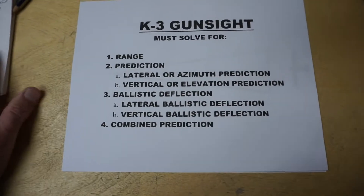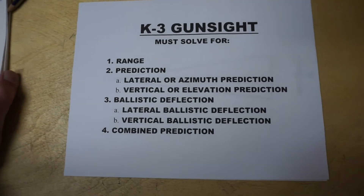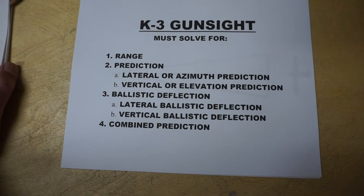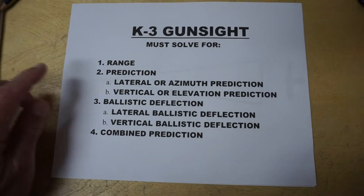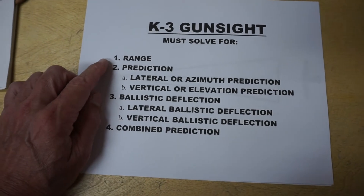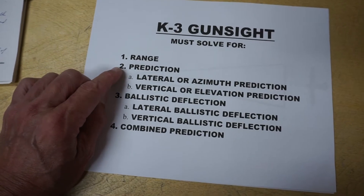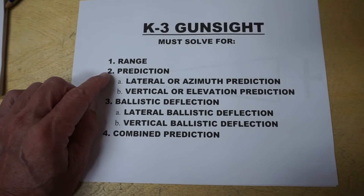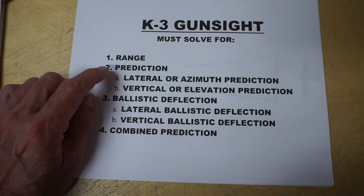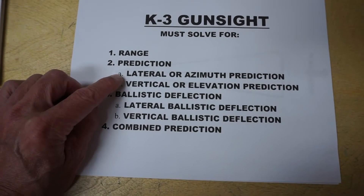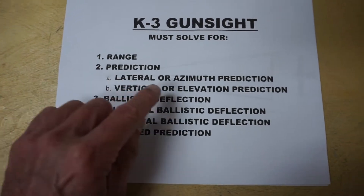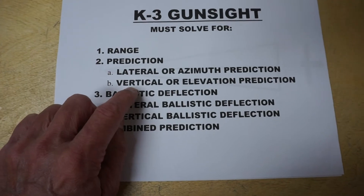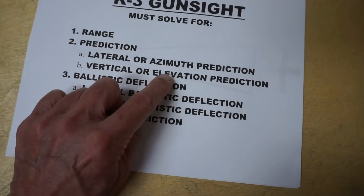The K-3 gun sight had to solve for multiple problems. It had to accurately determine the range of the attacking aircraft, and it had to make a prediction of where that aircraft was going to be. It had to do that in a lateral plane, the azimuth prediction, and in a vertical plane, the elevation prediction.